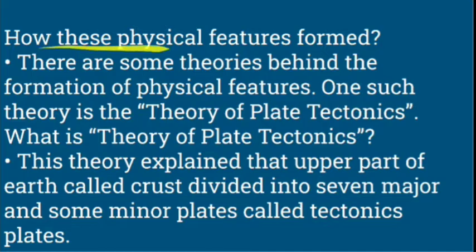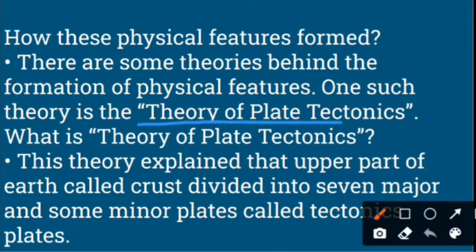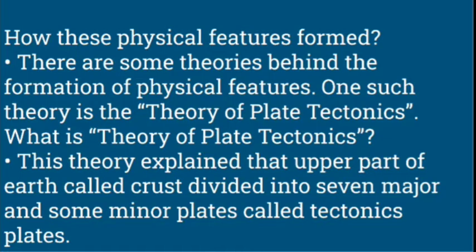How were these physical features formed? Physical features include land, mountains, and plains. There are many theories that explain this. The theory of plate tectonics is one key theory. The uppermost layer of the earth is the crust, and the crust is divided into 7 major and minor plates. Through the movements of tectonic plates, physical features and landforms are created.